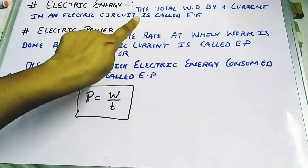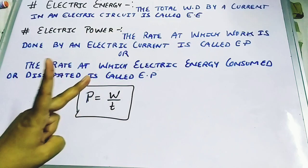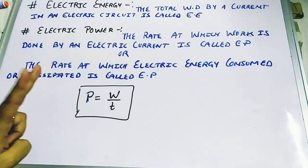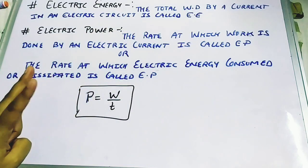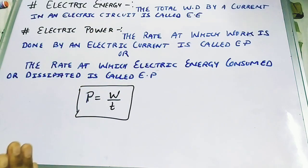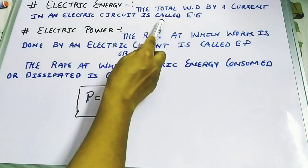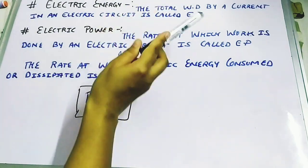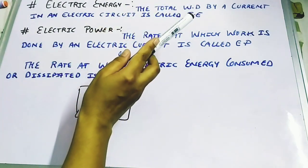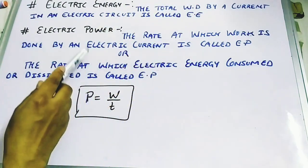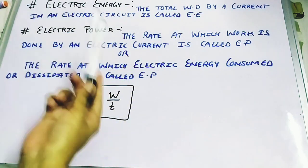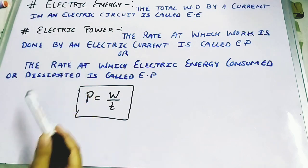Don't get confused between electrical energy and electrical power. Both are quite similar, but electrical energy is the total work done by the current in the circuit, while electrical power is the rate at which that work is being done.